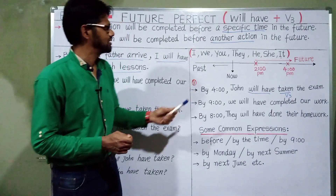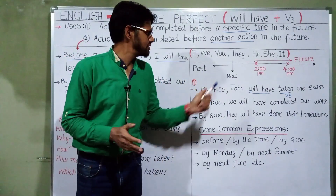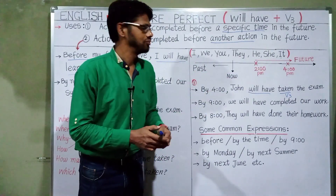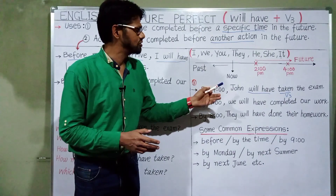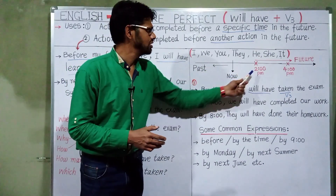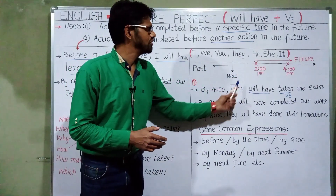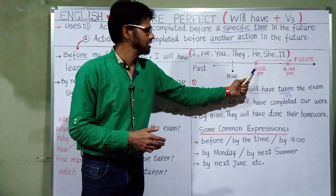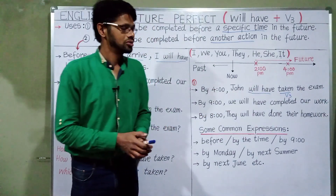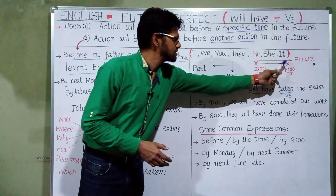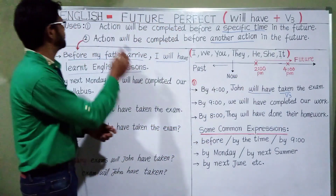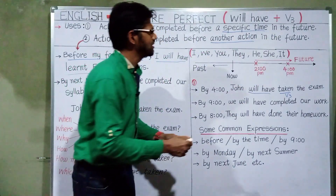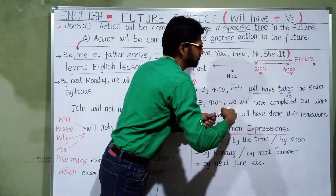Let us learn with the help of some examples. We are in the present now and we are talking about the future. For John there is an exam tomorrow — John will take his exam at 2 o'clock. The timing of the exam is 2 to 4. This is a specific time, so the action will be completed before a specific time in the future.